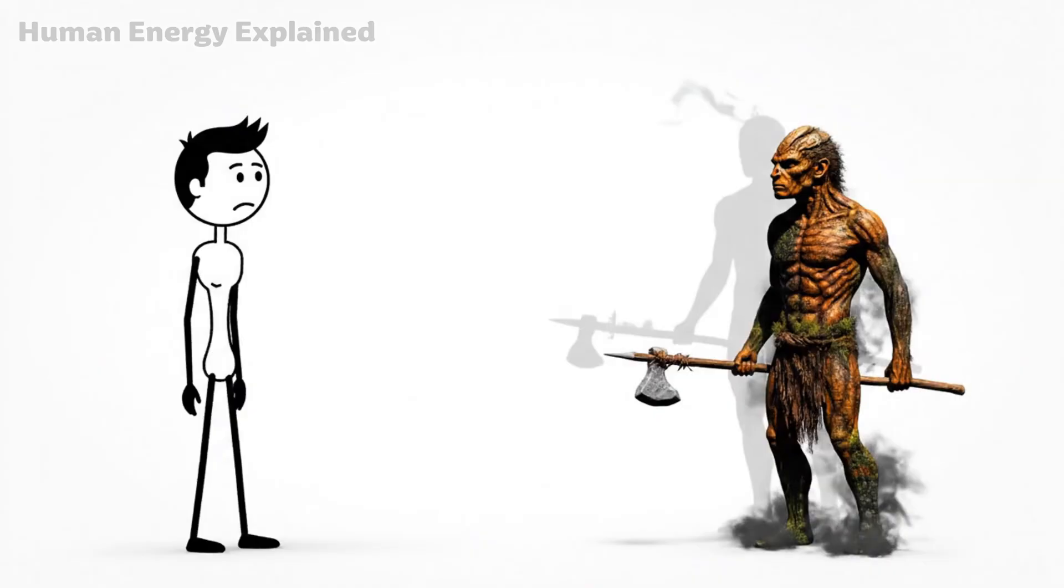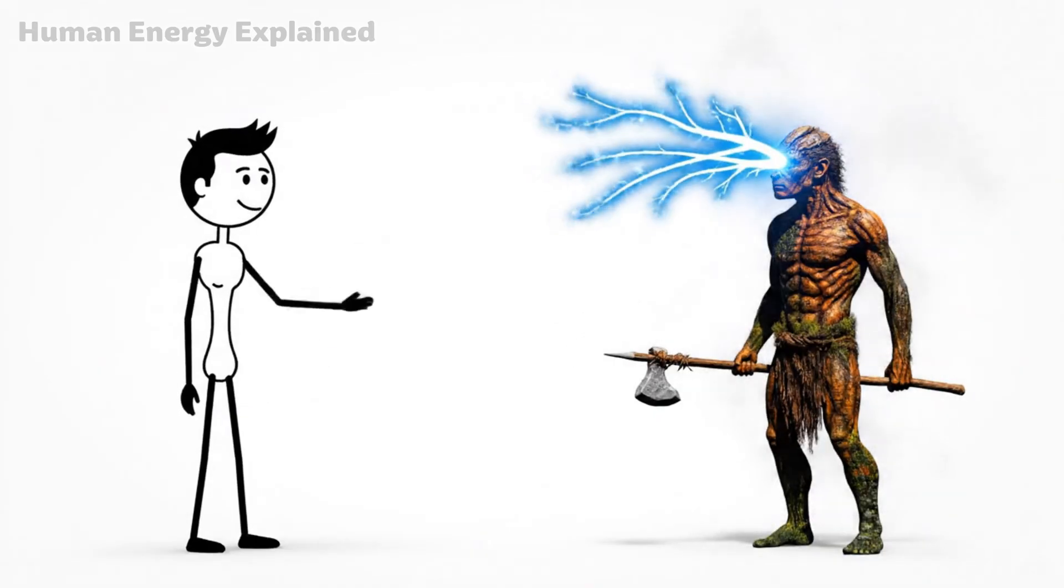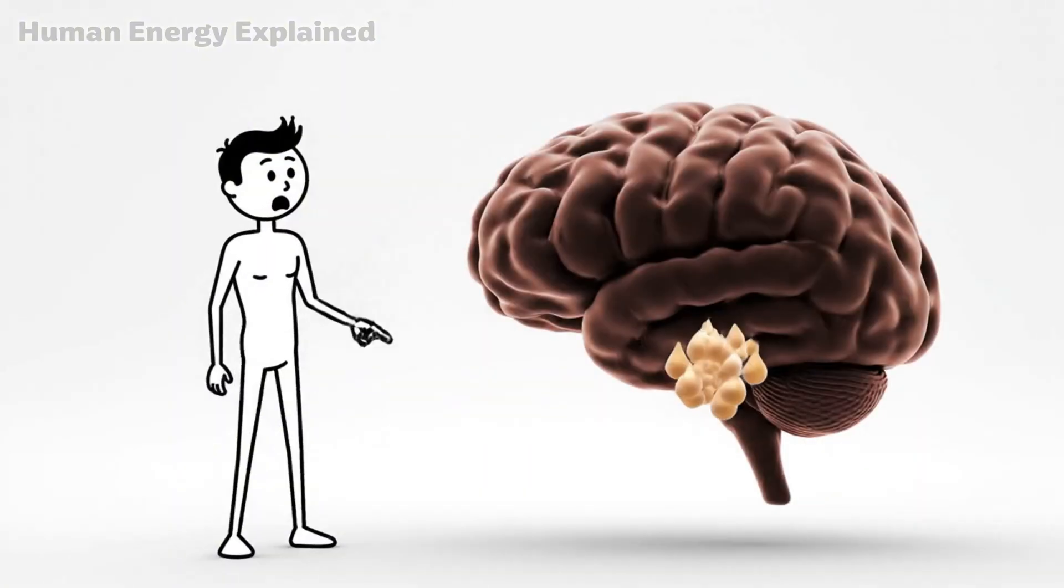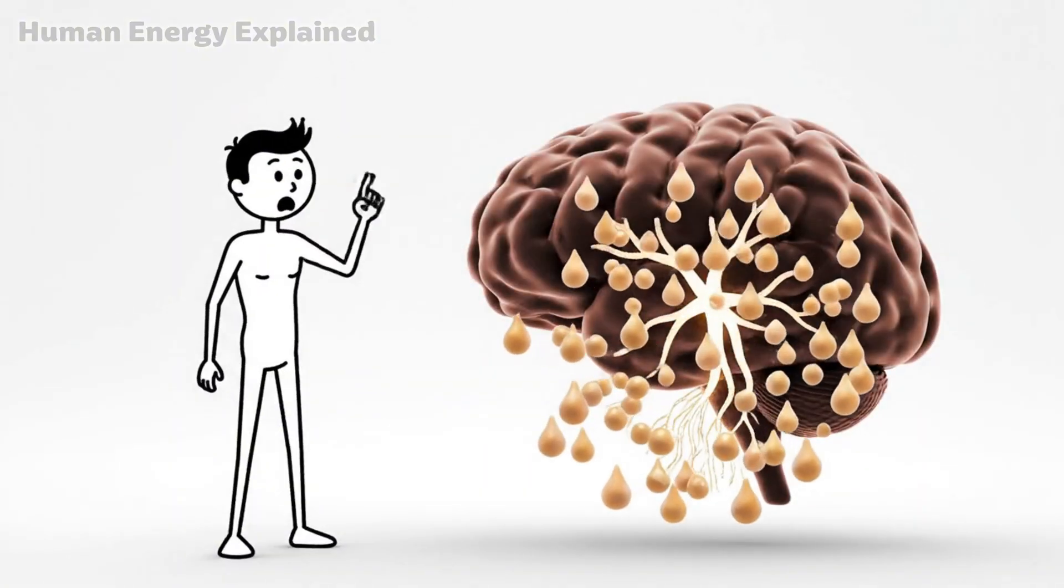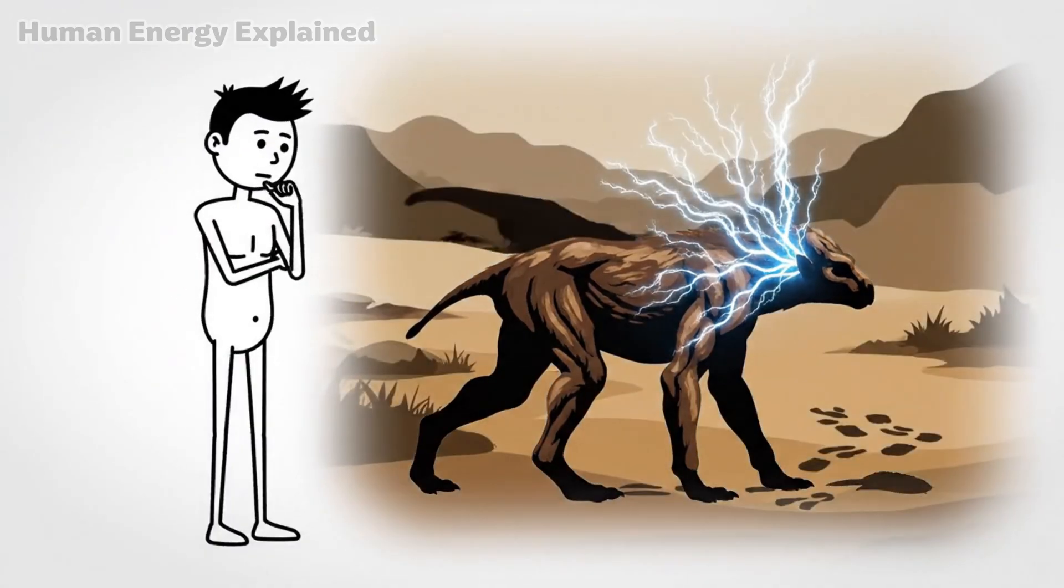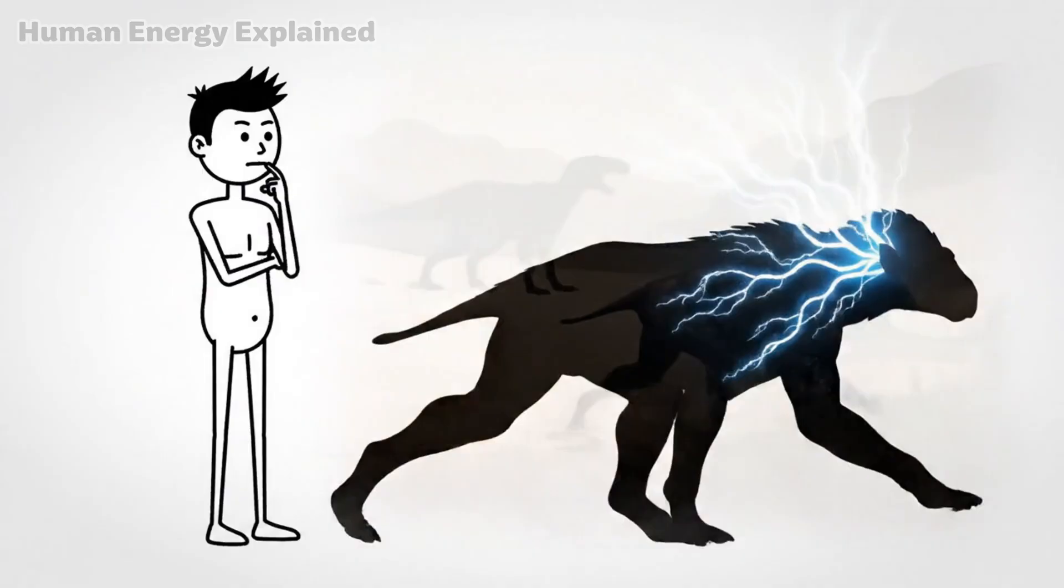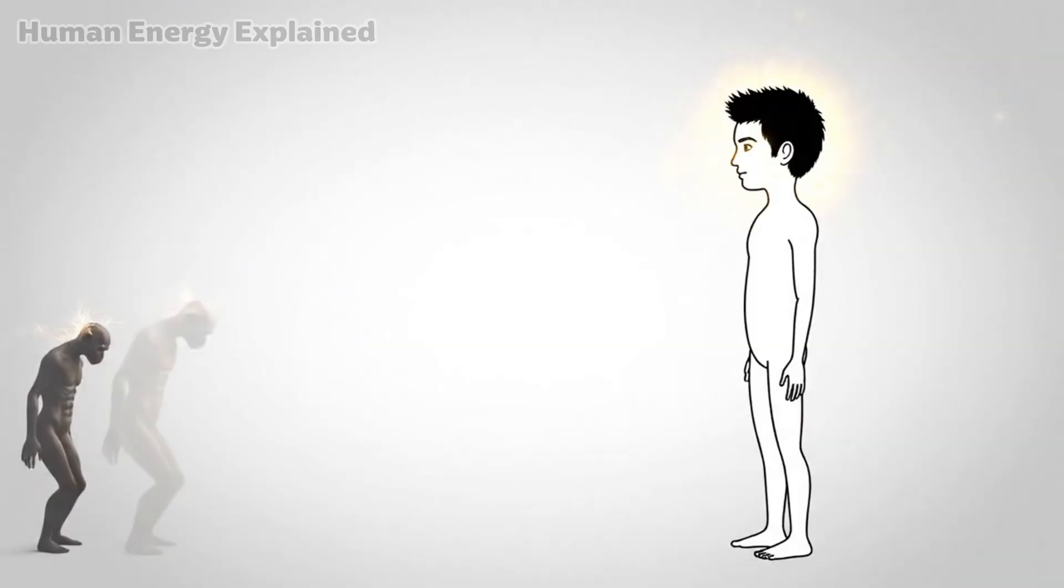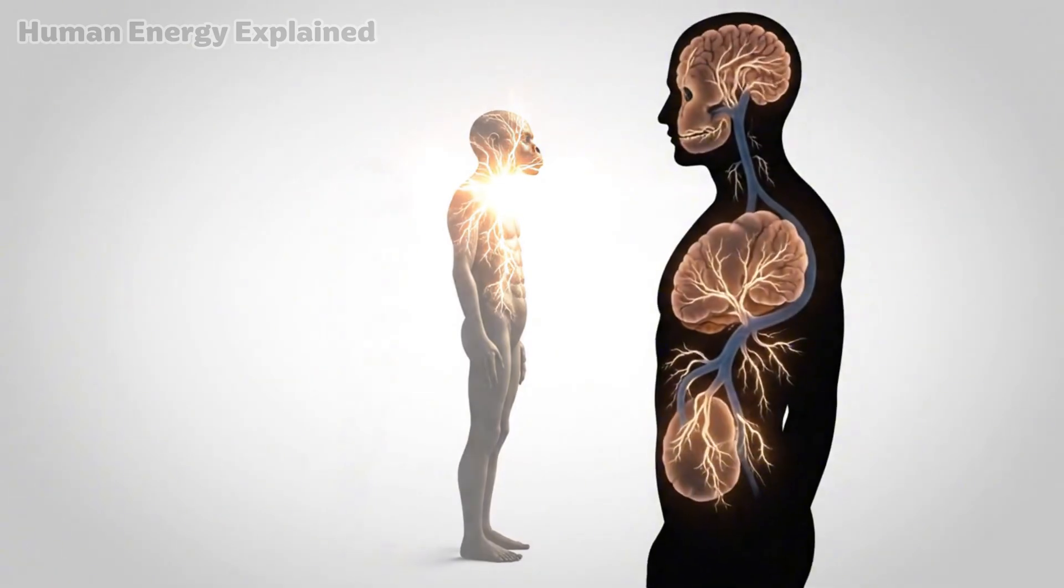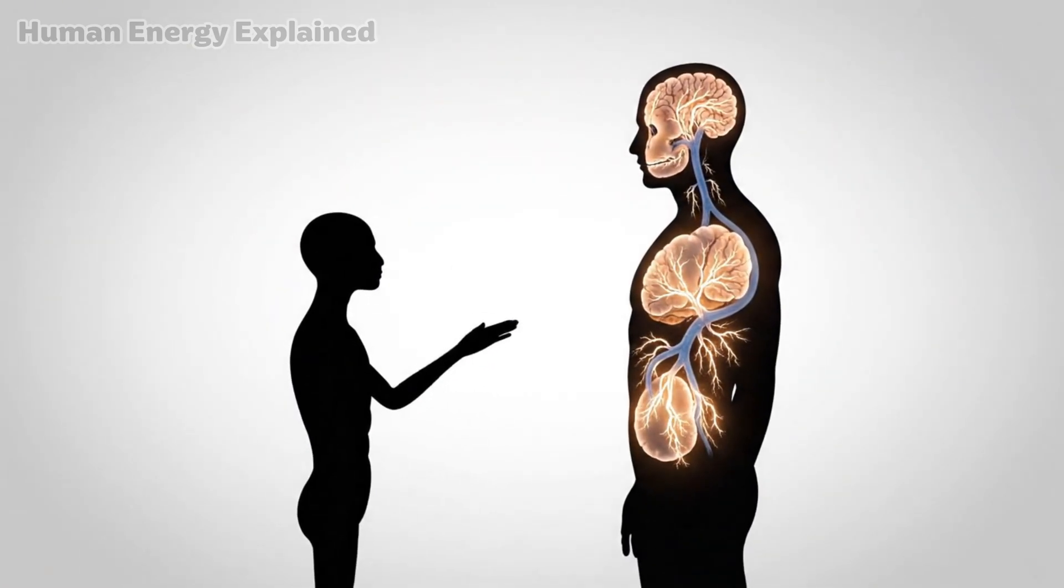This makes evolutionary sense. Ancient humans who couldn't think clearly while hungry wouldn't have survived. They needed sharp mental faculties to find food, track animals, avoid predators all while running on empty. Natural selection favored brains that actually performed better during food scarcity. That genetic programming still lives inside you.